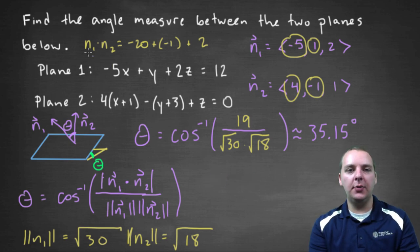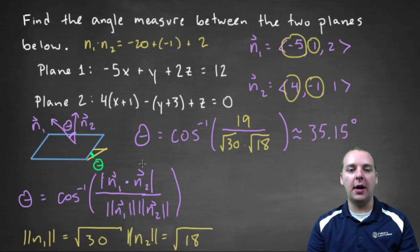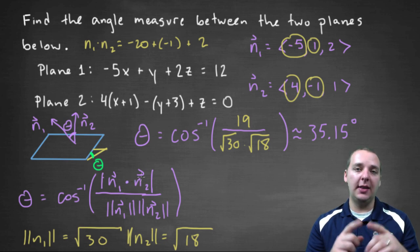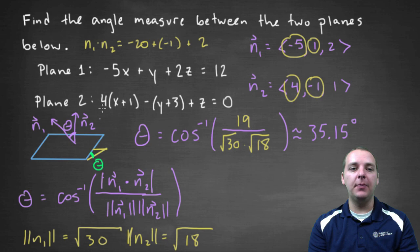So anyways, that's how you find the angle measure between two planes. Basically, you just take each of their normal vectors, and then use your formula that has dot products and whatnot to find the angle measure between those normal vectors. And then that'll be the same as the angle measure between the planes.